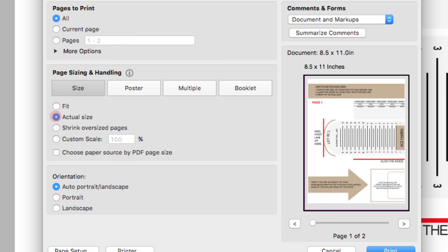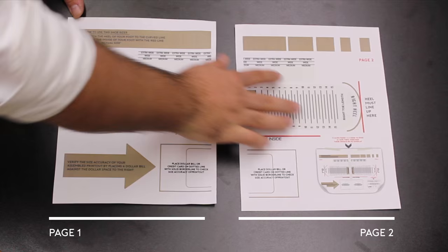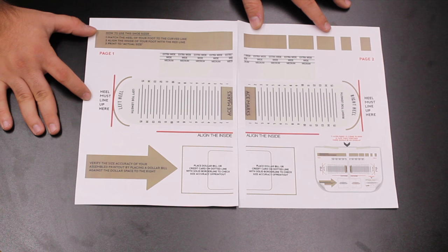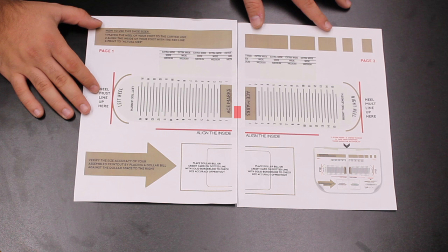Once you have page one and page two printed out, line them up with page one on your left and page two on the right, and put them together along the lines. It's important not to have any overlap or you won't get an accurate measurement. Line them up where the two sides are just touching.